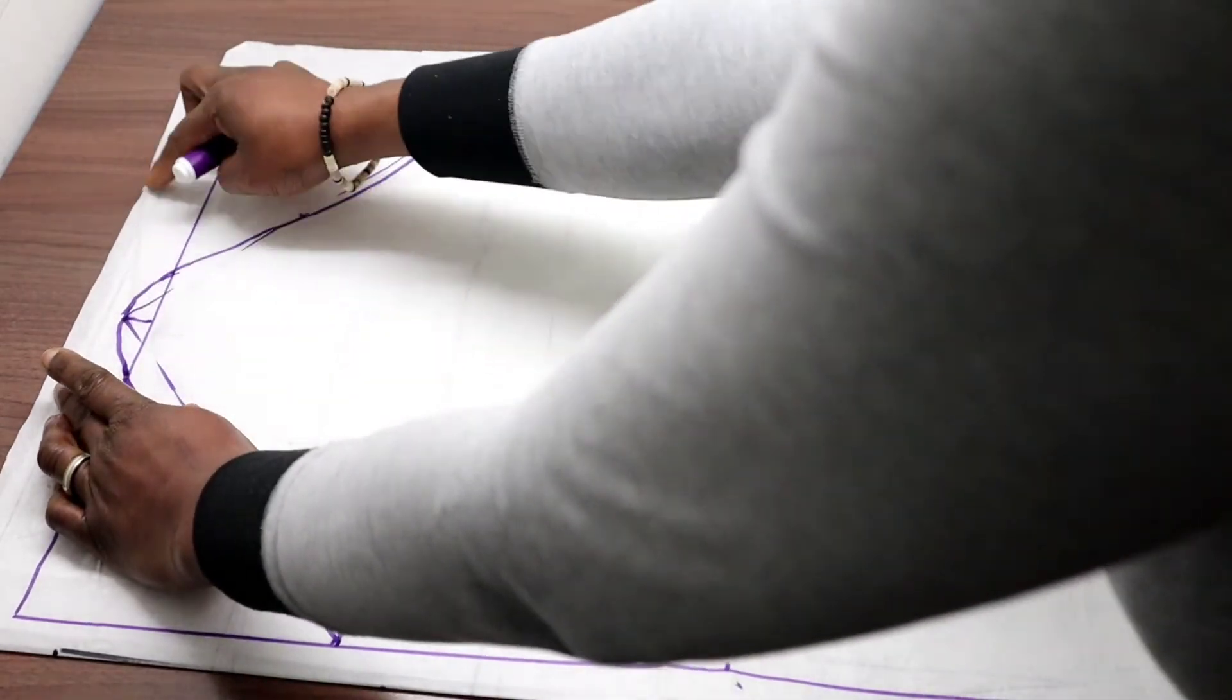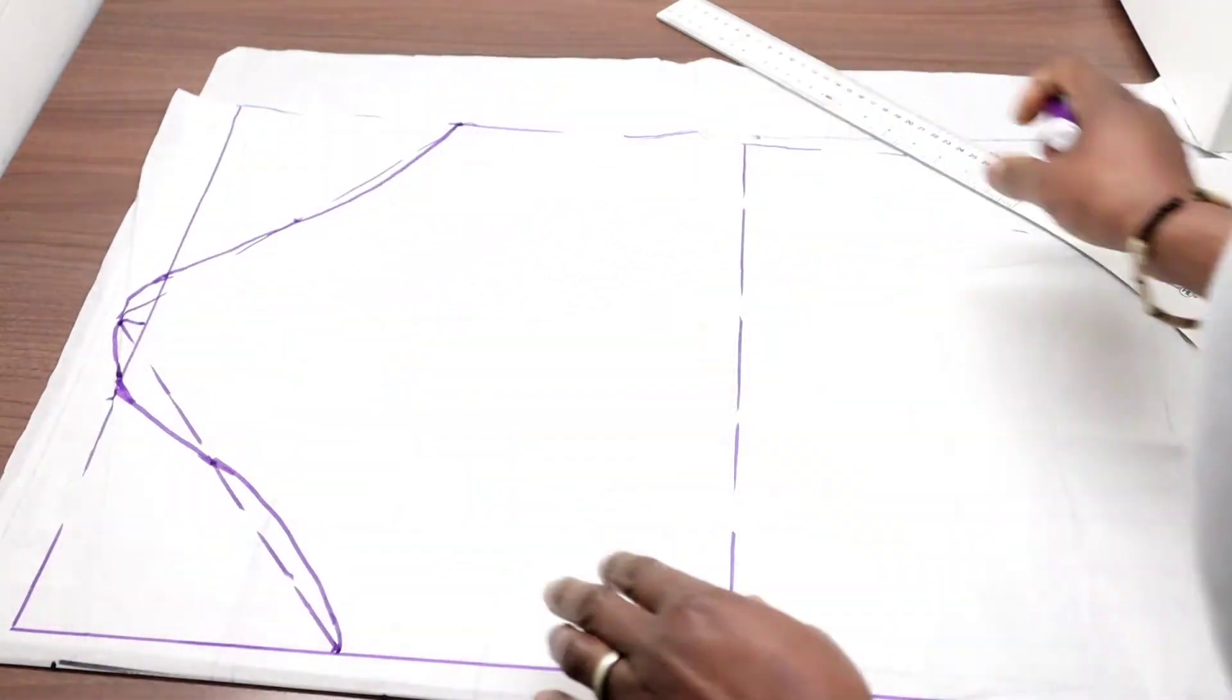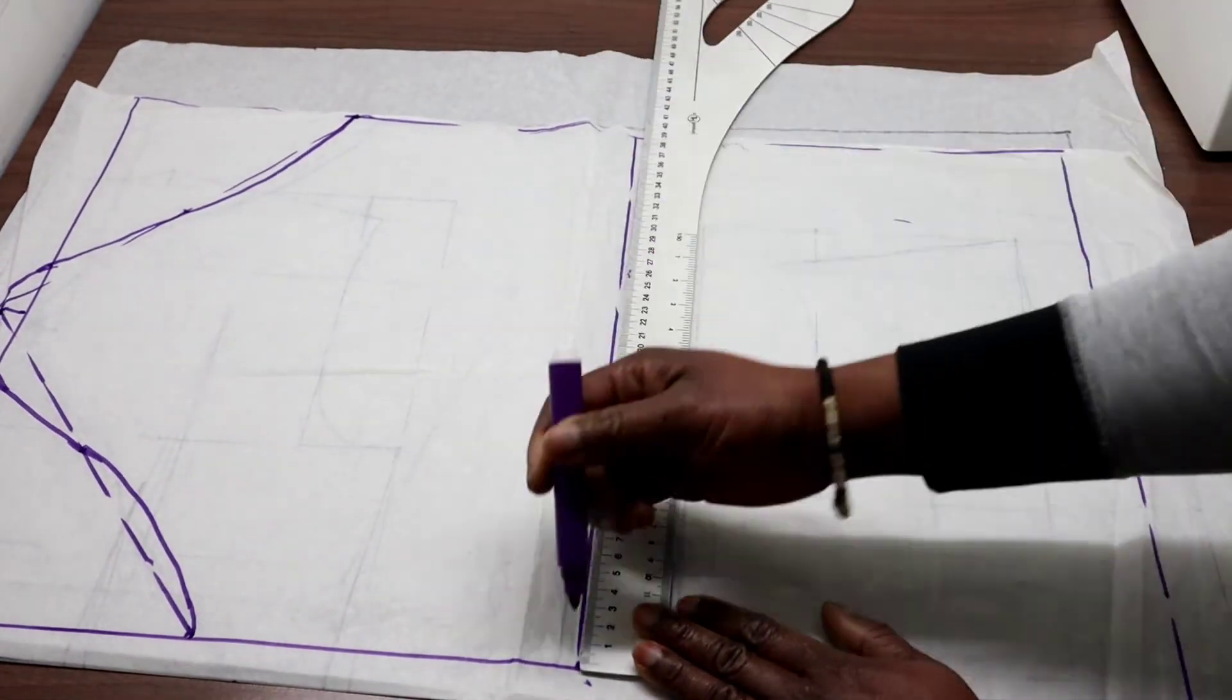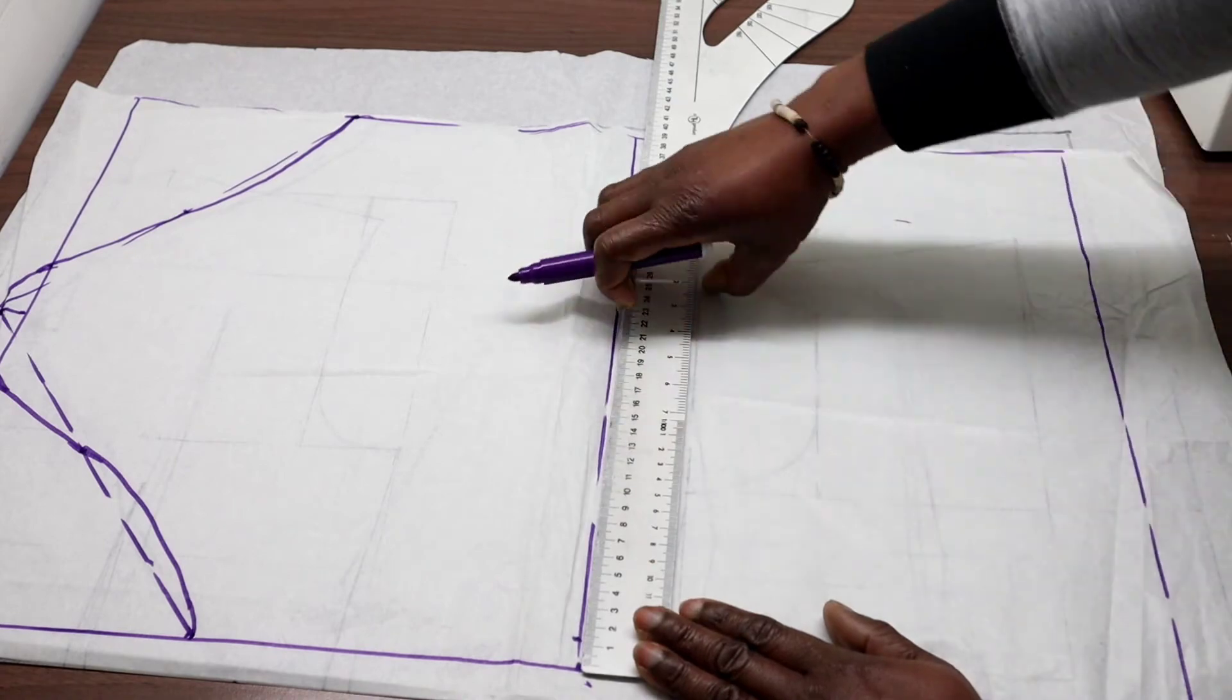The next, make sure this point is highlighted because that is where you are going to connect your sleeve to your shoulder. Here we go in with 1.5 centimeters.